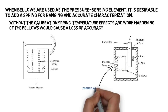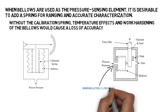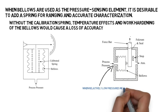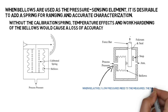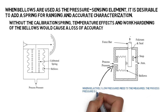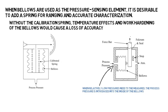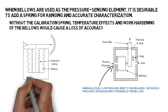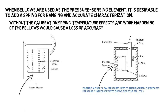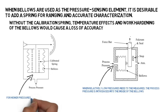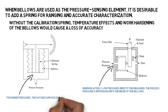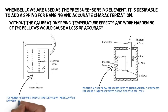When relatively low pressures need to be measured, the process pressure is introduced into the inside of the bellows. For higher pressures, the outside surface of the bellows is exposed to the process pressure.